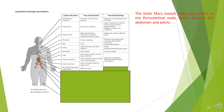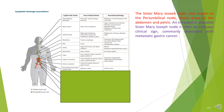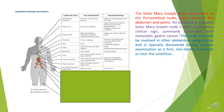The Sister Mary Joseph node, also known as the periumbilical node, drains areas of the abdomen and pelvis. An enlarged or palpable Sister Mary Joseph node is often an ominous clinical sign, commonly associated with metastatic gastric cancer. It may also be involved in other abdominal malignancies and is typically discovered as a firm, non-tender nodule at or near the umbilicus.